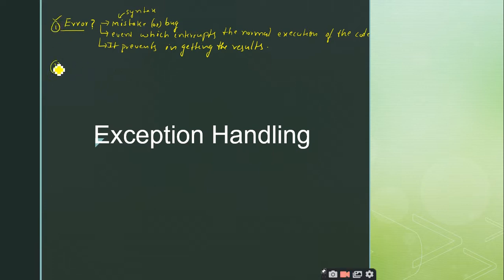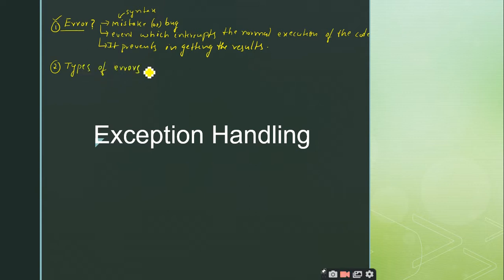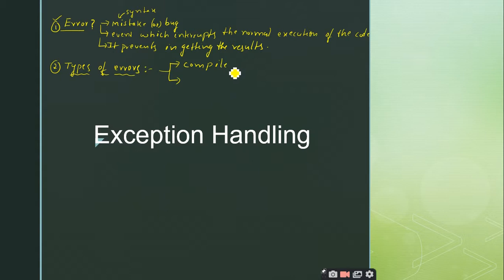Coming to the second basic topic: types of errors. Can anybody tell me what are the basic types of errors we have in C or C++? The answer is runtime errors and compile-time errors — super! We categorize errors in programming languages as compile-time errors and runtime errors.